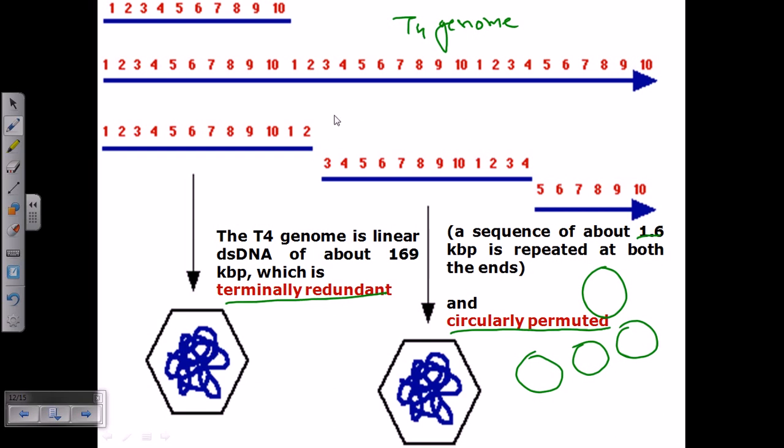So that, as you can see in both the ends, in this example one-two starts at the end also one-two. In this case, starts with three-four and ends also with three-four. And in this case, it will start with five-six and end up with five-six somewhere. So this is called the terminal redundancy of the T4 genome.